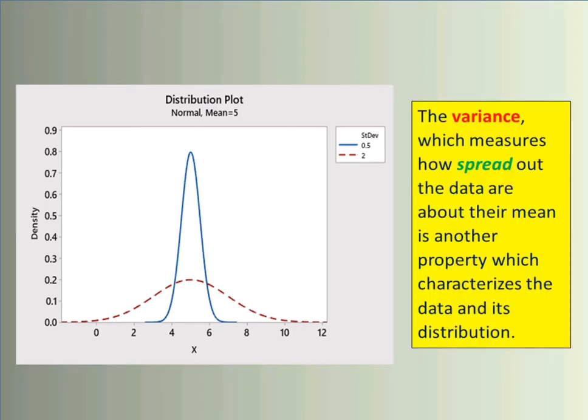The variance, which measures how spread out the data are about their mean, is another property which characterizes the data and its distribution.